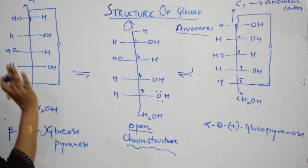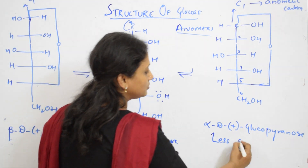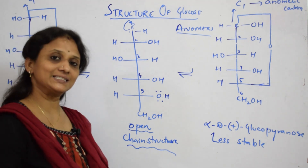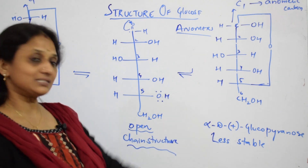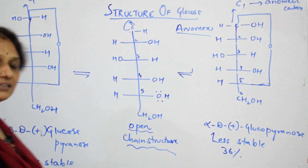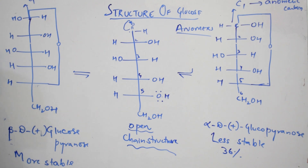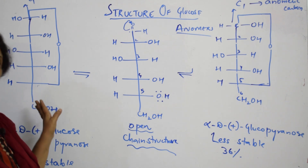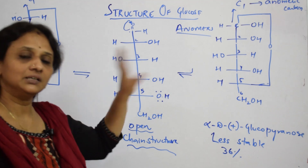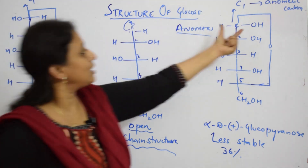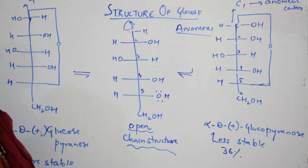Comparing the two: the alpha structure is less stable compared to the beta structure — beta is more stable. The glucose molecule mostly exists in beta form. In terms of percentage, alpha is only 36% in nature and beta is 64%. So glucose exists predominantly in beta form. Remember: open chain structures are Fischer projection structures, and cyclic structures are alpha and beta Haworth structures.